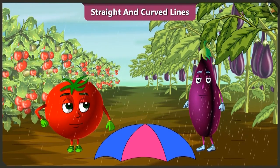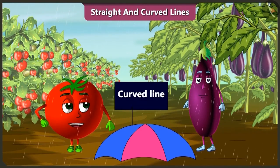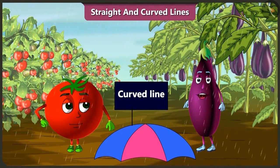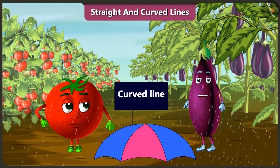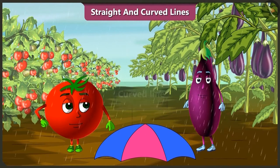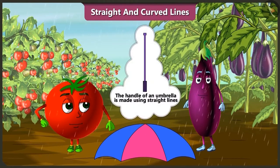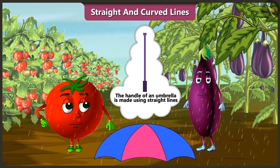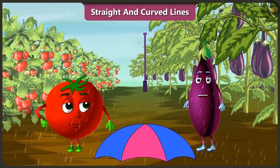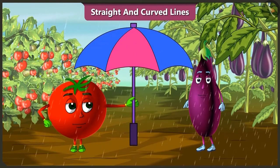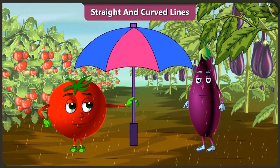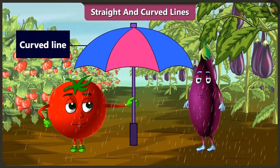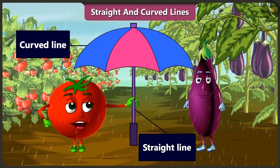Bingu, does an umbrella only have curved lines? Think. There are only curved lines in an umbrella. Didn't you notice? The handle of an umbrella is made using a straight line. You are right. This straight line becomes the handle of this umbrella. Now you did it right. The umbrella is made using both curved and straight lines.